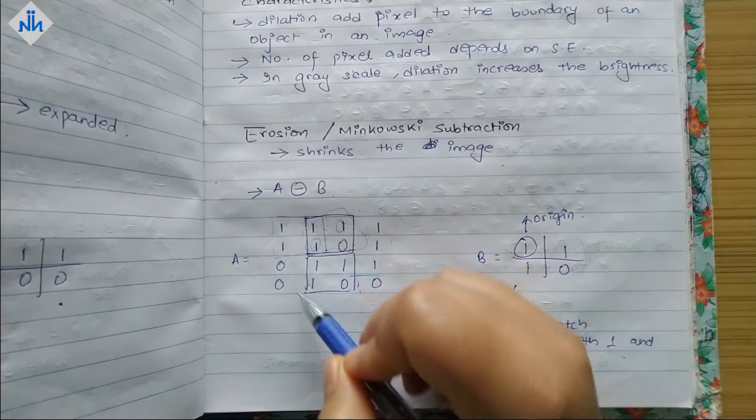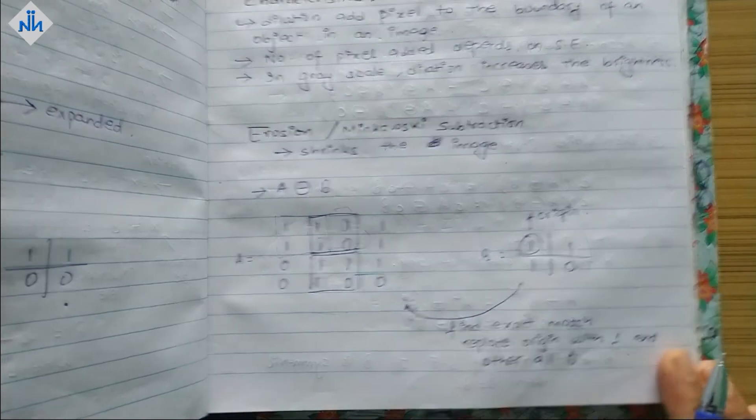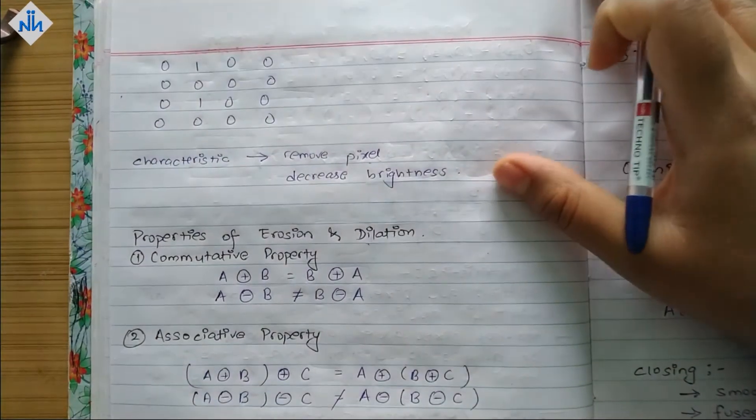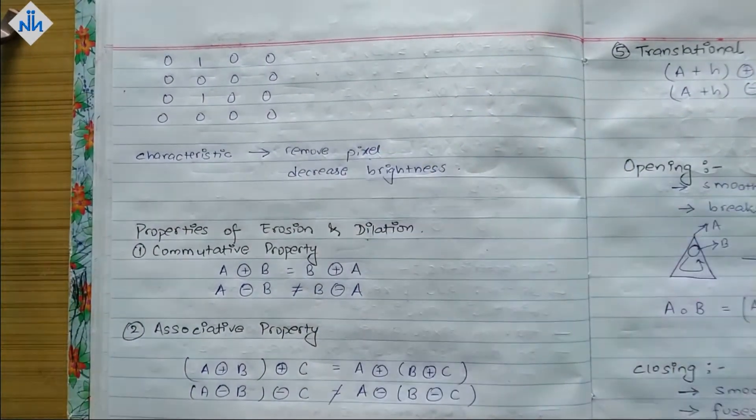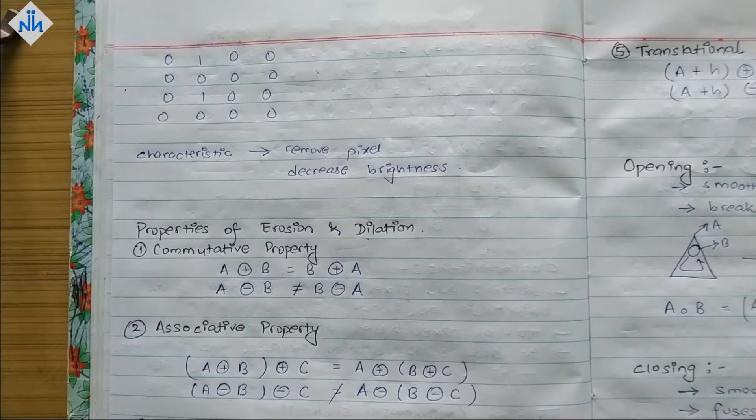So this will become zero zero. This will remain one and this will become zero zero. So we will have our final answer something like this. So you can see it has shrinked our image. Last time it was expanding our image. So this was all about erosion.